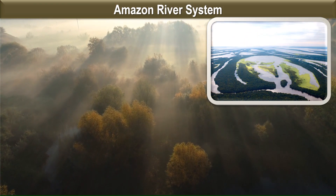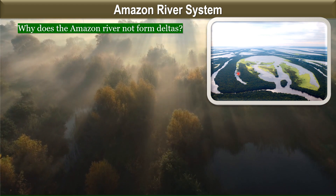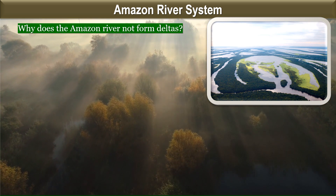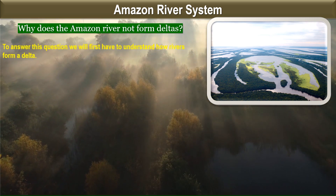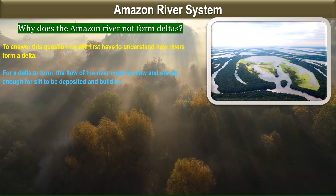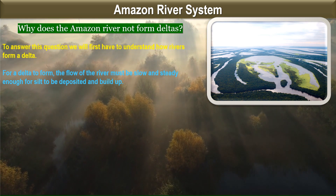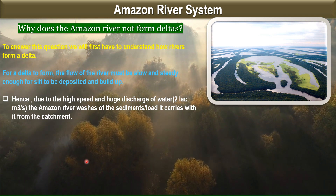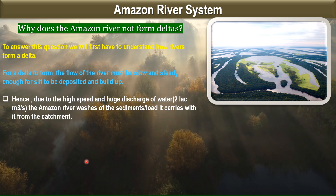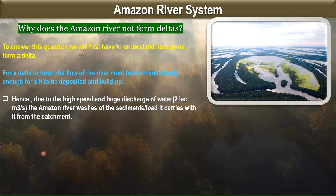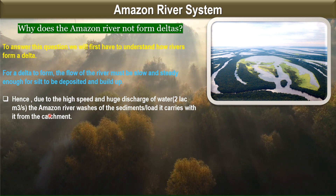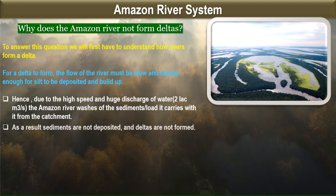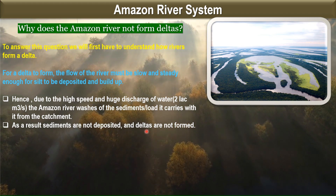Why does the Amazon River not form deltas? To understand this, we first need to understand how rivers form deltas. Usually, a river needs to flow with slow and steady speed so that silt gets deposited and builds up. The discharge of the Amazon is very huge — almost 2 lakh cubic meters per second — so due to its high speed and huge discharge, the Amazon washes off the sediments it carries. As a result, sediments are not deposited and deltas are not formed.